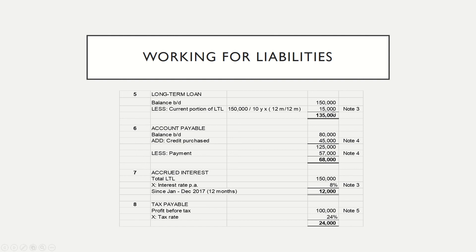RM150,000 minus RM15,000 equals RM135,000. For working on accounts payable, the balance brought forward equals RM80,000. Refer to Note 4: Zita Berhad made additional credit purchases of RM45,000. So RM80,000 plus RM45,000 equals RM125,000. At year end, RM57,000 of the accounts payable balance was paid. Therefore, the closing balance for accounts payable is RM68,000.